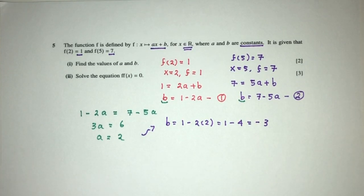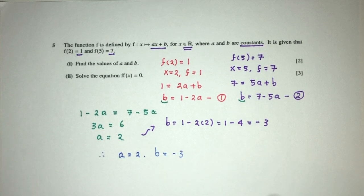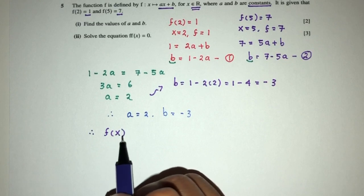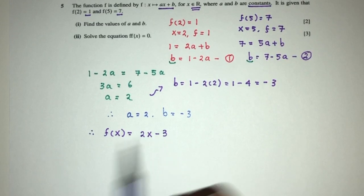From here we can clearly see we were able to find the values of a and b. a will be 2 and b will be the value of minus 3. So which means the value of f(x), or fx, is equal to 2x minus 3. Simply a straight line.